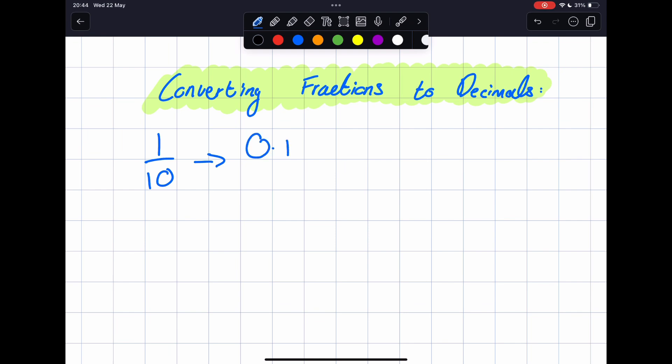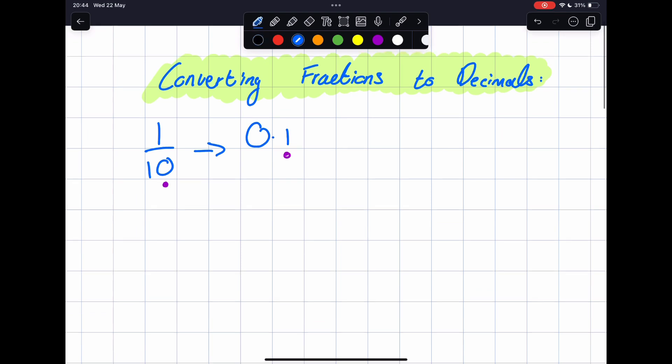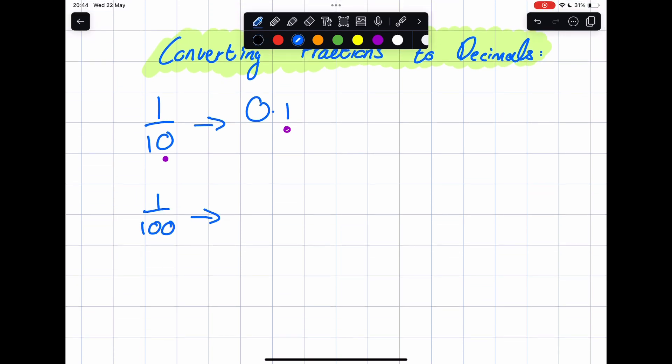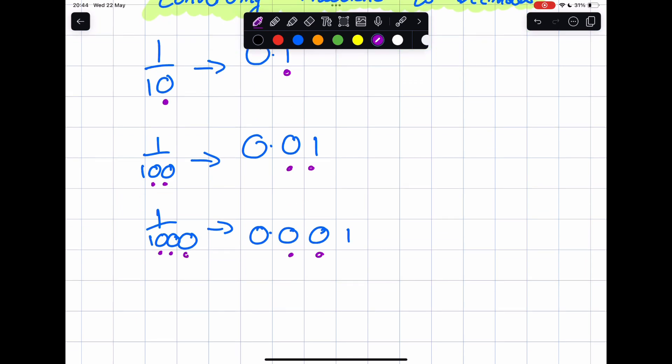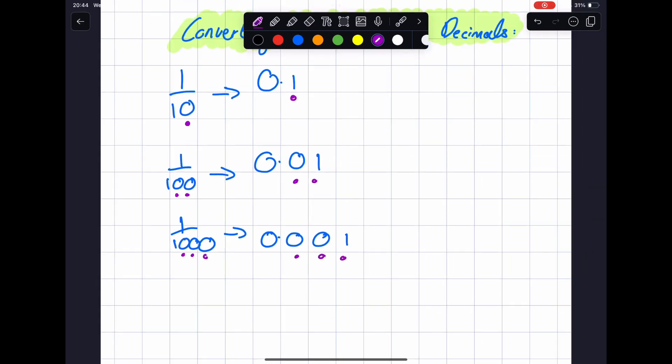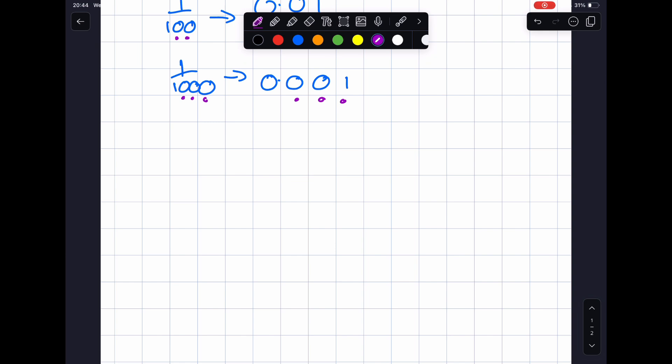A very helpful tip when converting fractions to decimals is to see how many zeros are in the ten underneath. So with this we've got one zero, therefore one decimal place. But one over one hundred, there's two zeros, so two decimal places. And one over a thousand, there's three zeros on the thousand, therefore three decimal places.